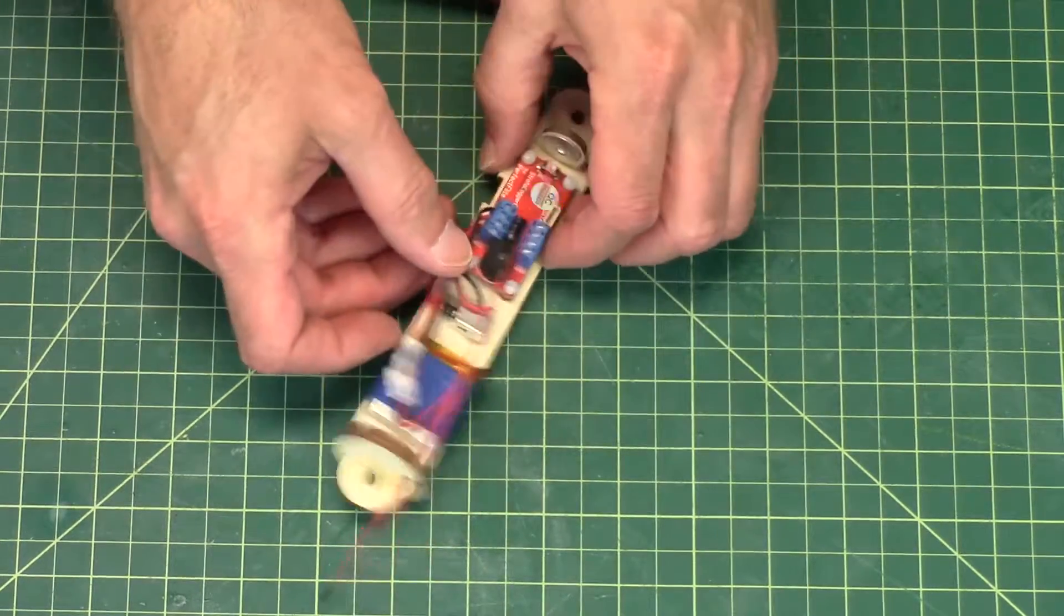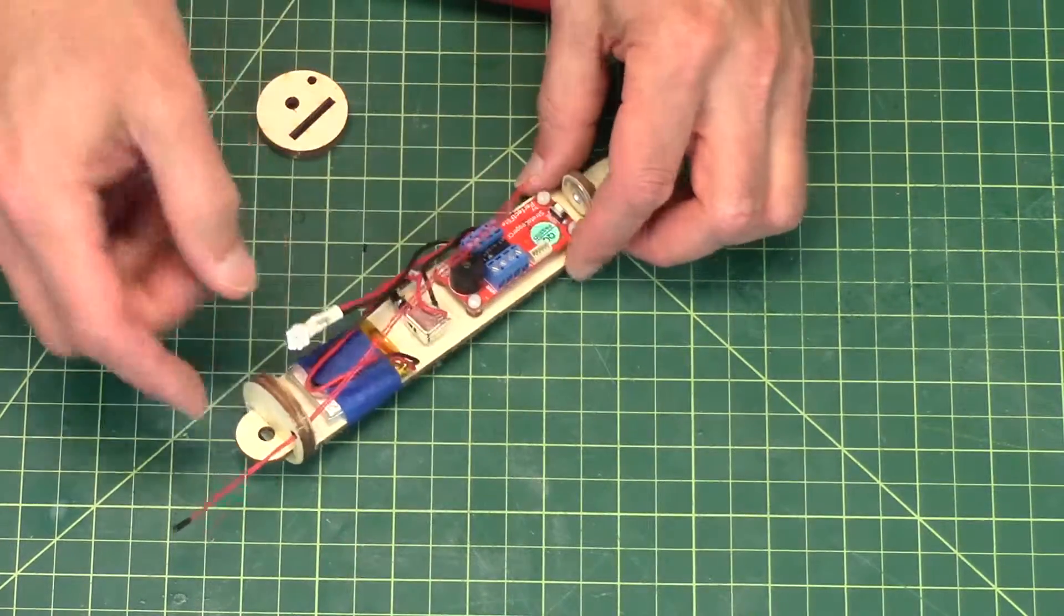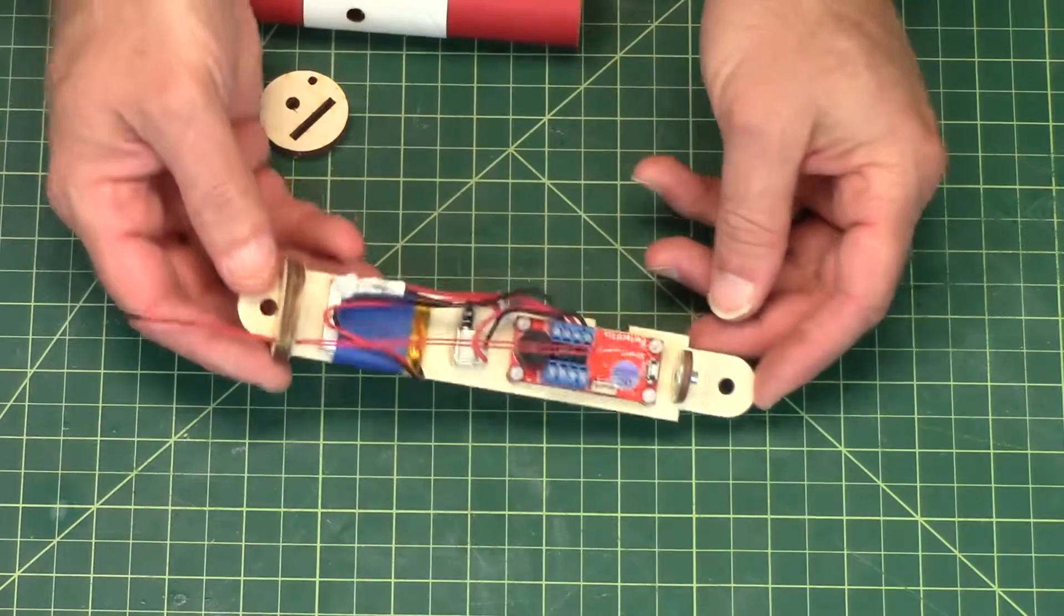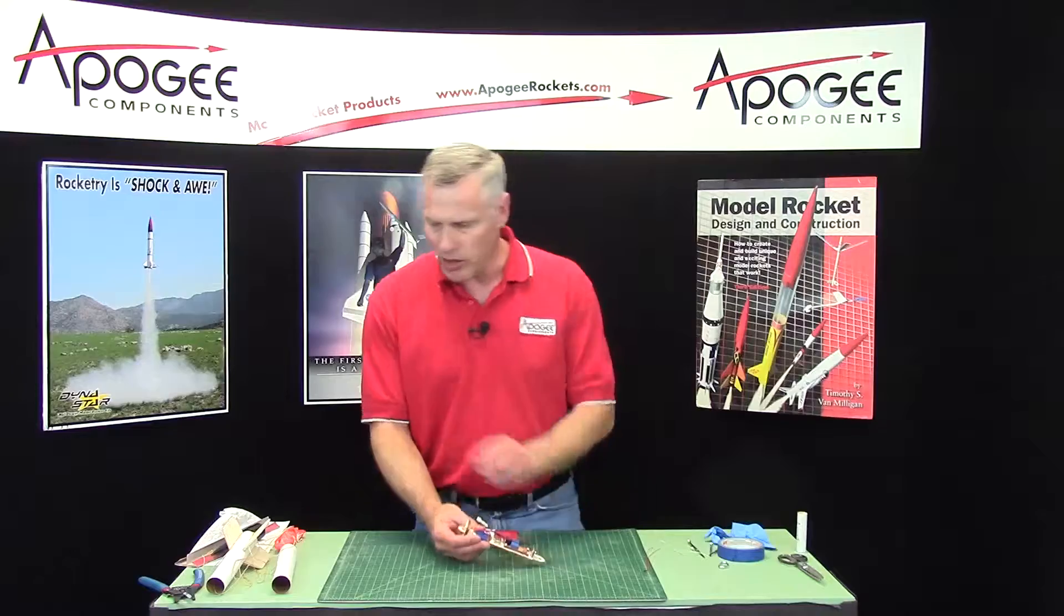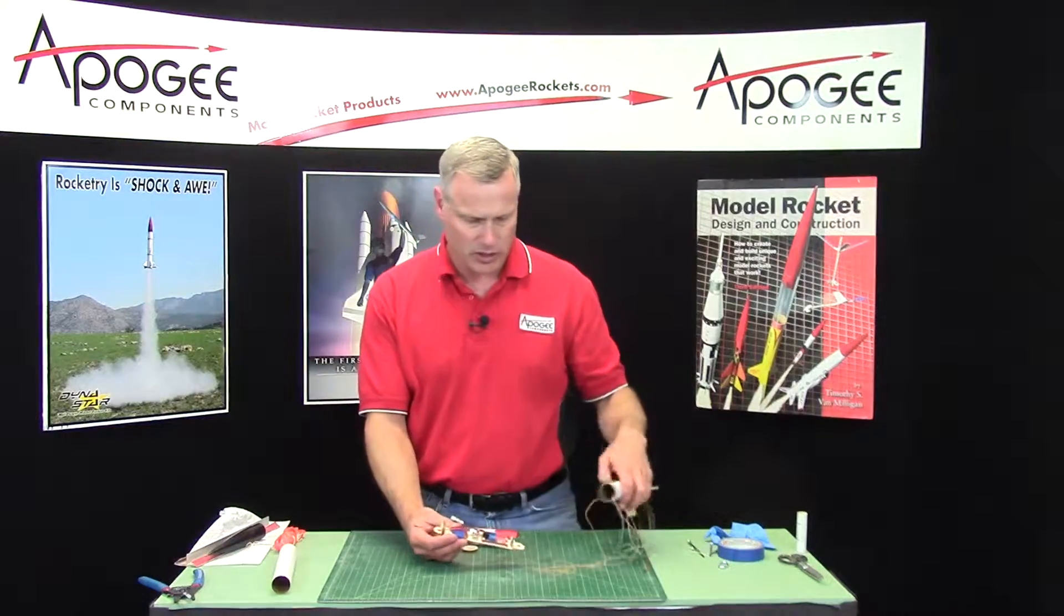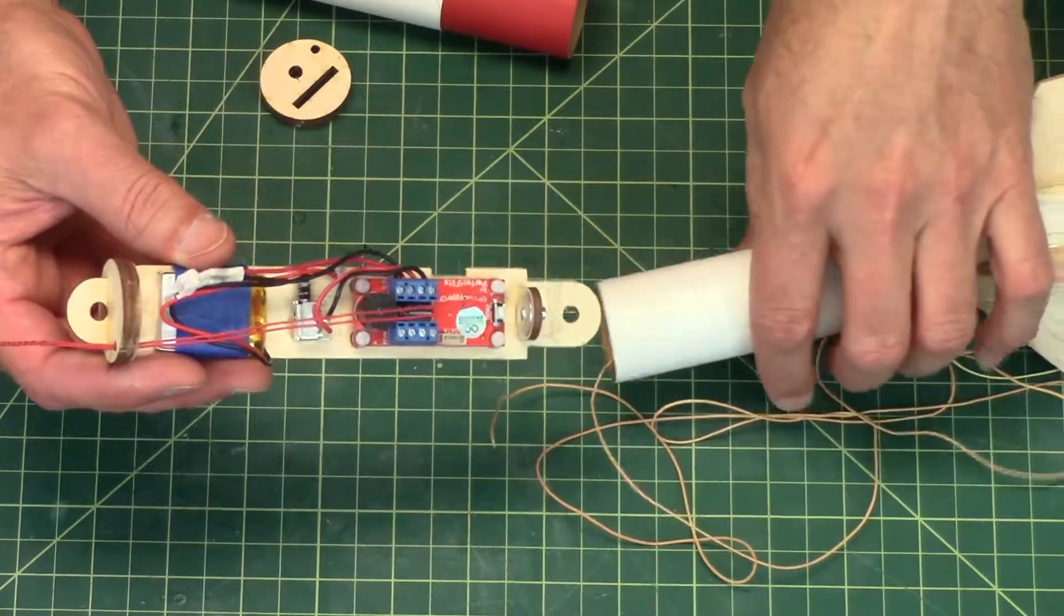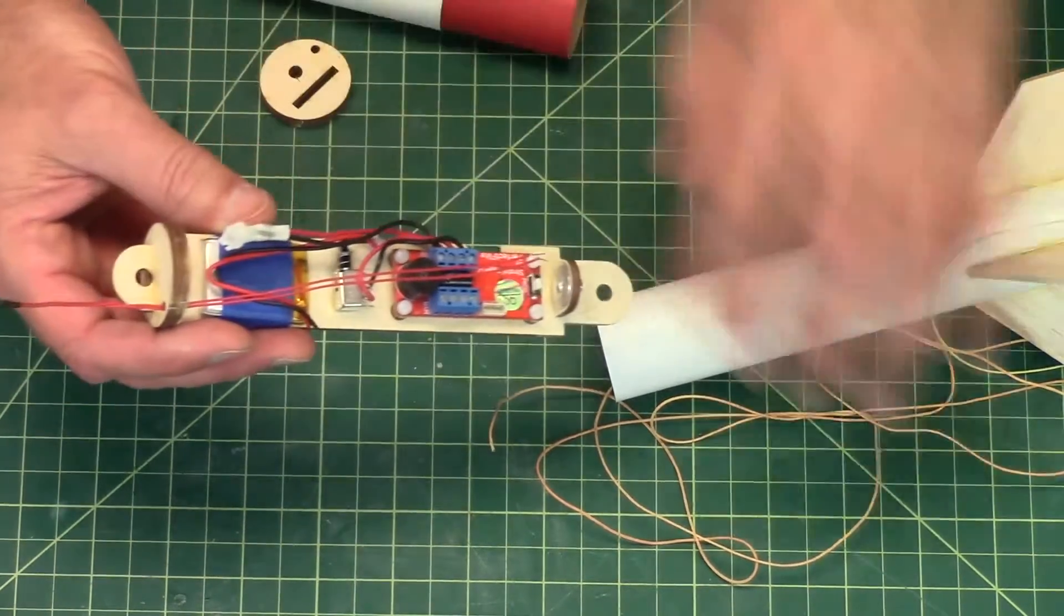And then from there it goes to the terminal blocks. Now on the altimeter itself, the end with the apogee, that's the bottom. So that's going to go towards the fins on the rocket. So that's going to be down, this is going to be up.